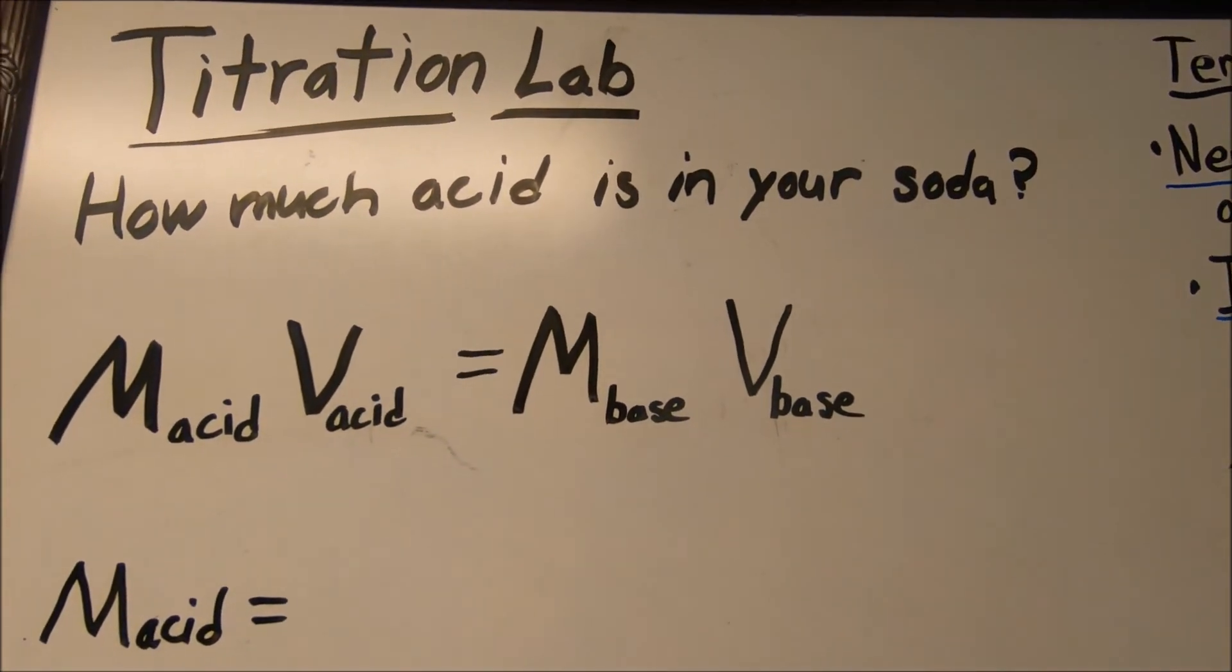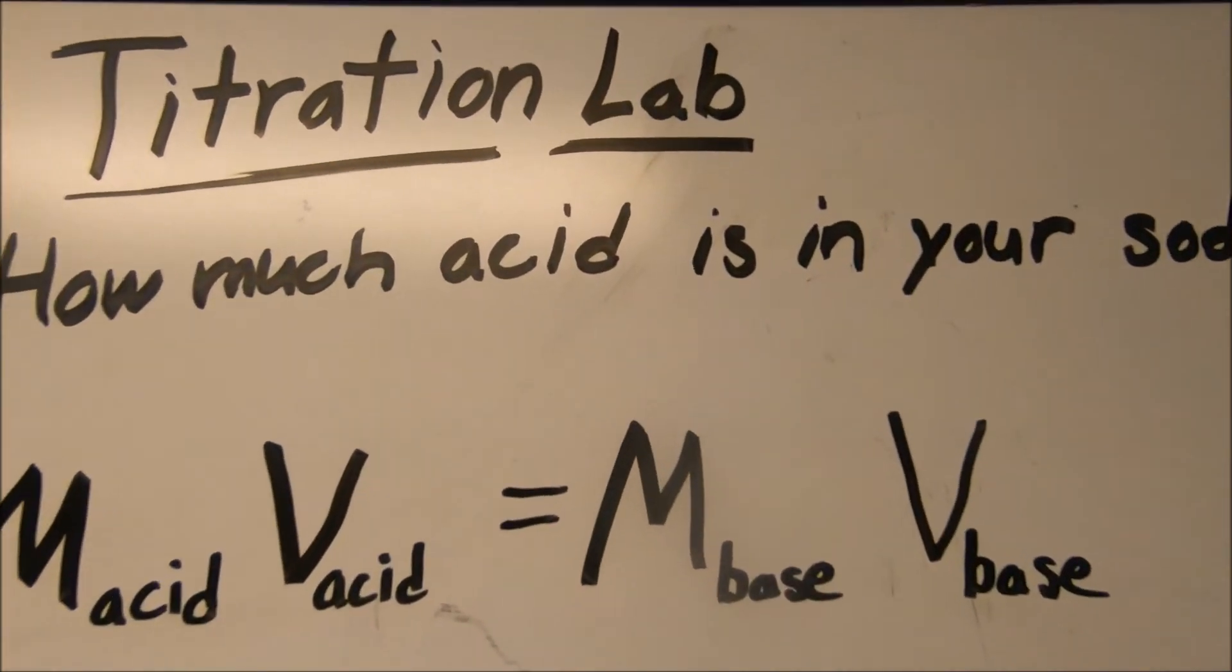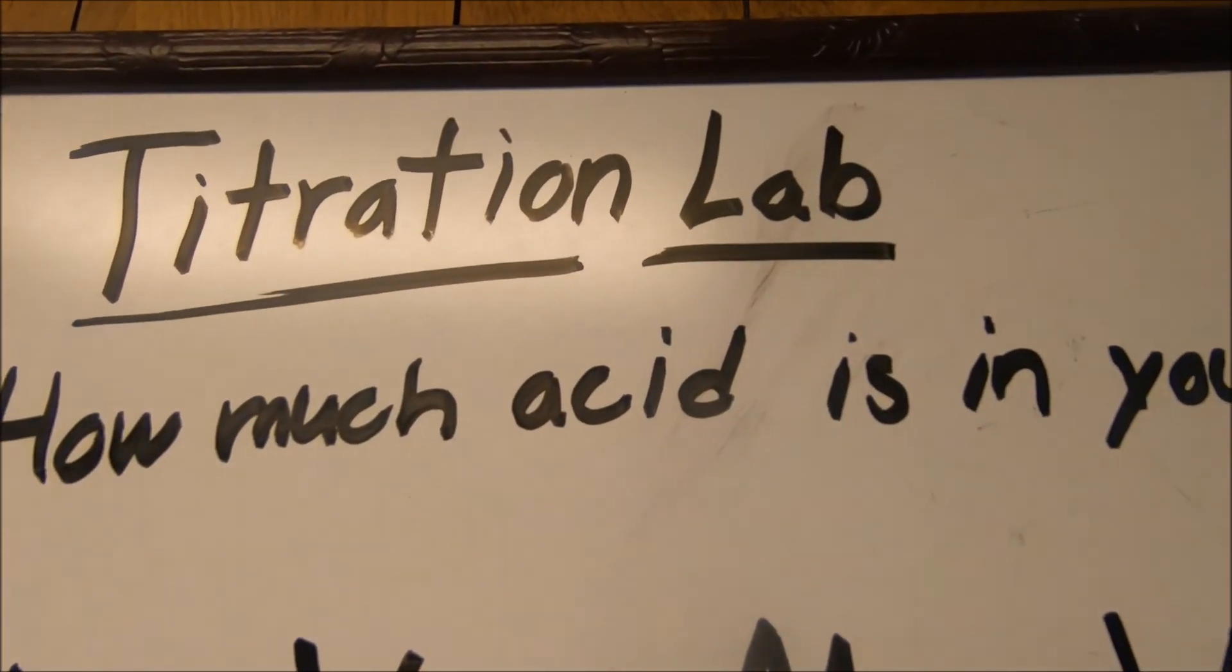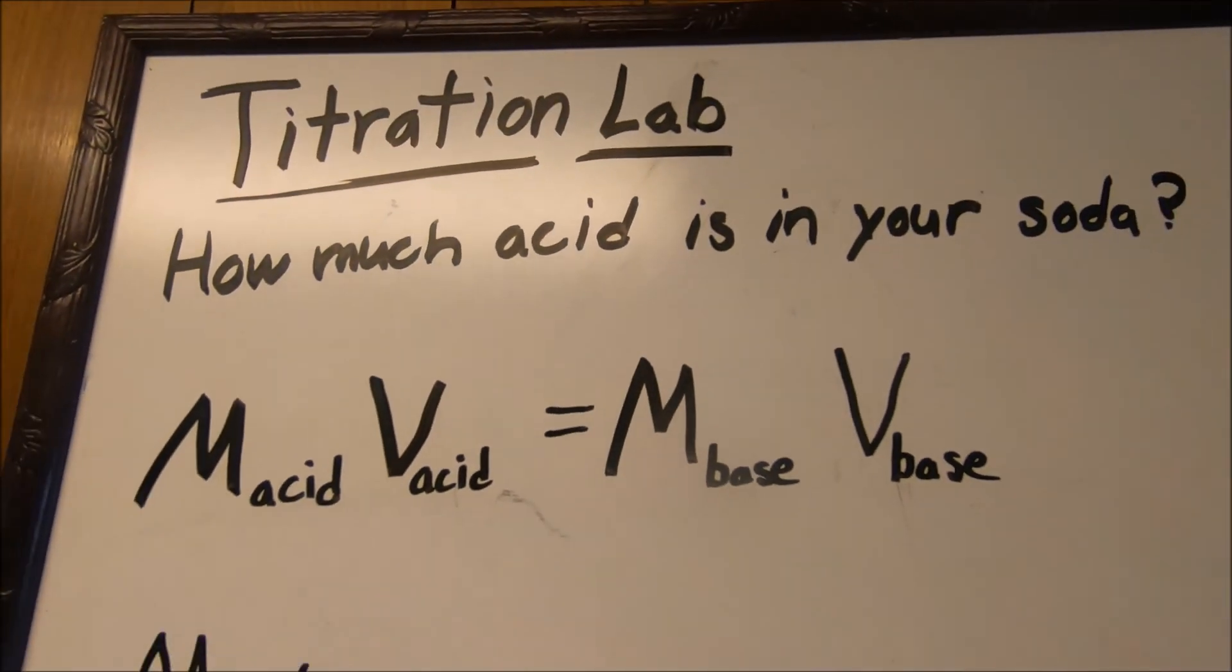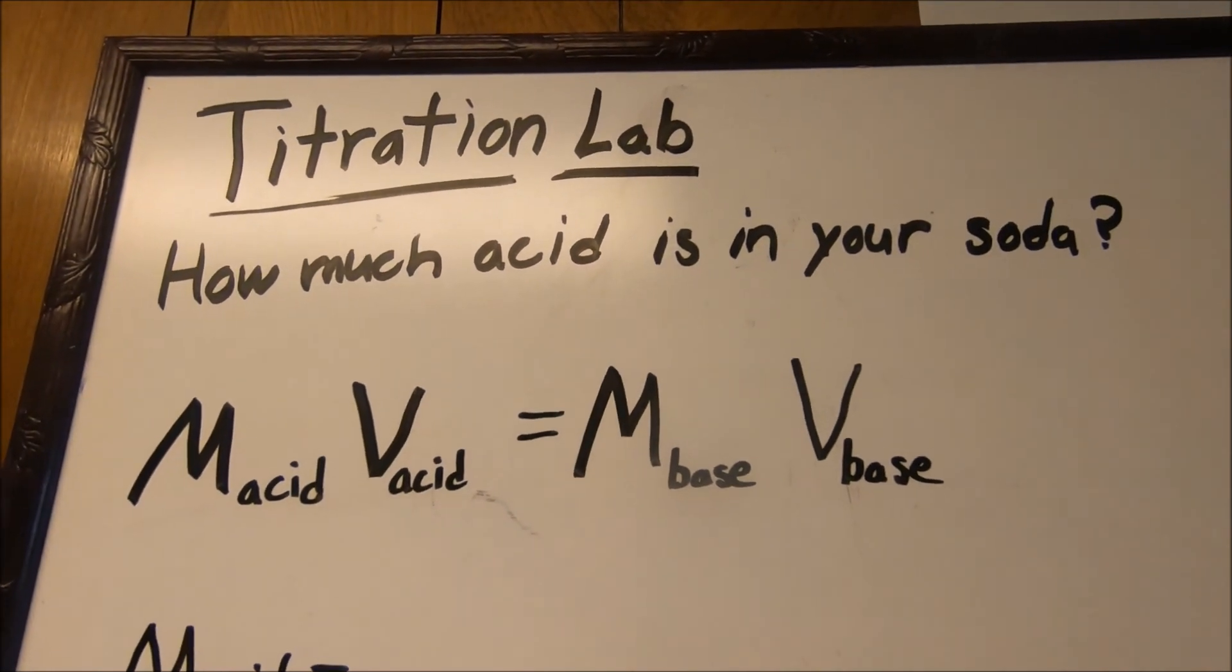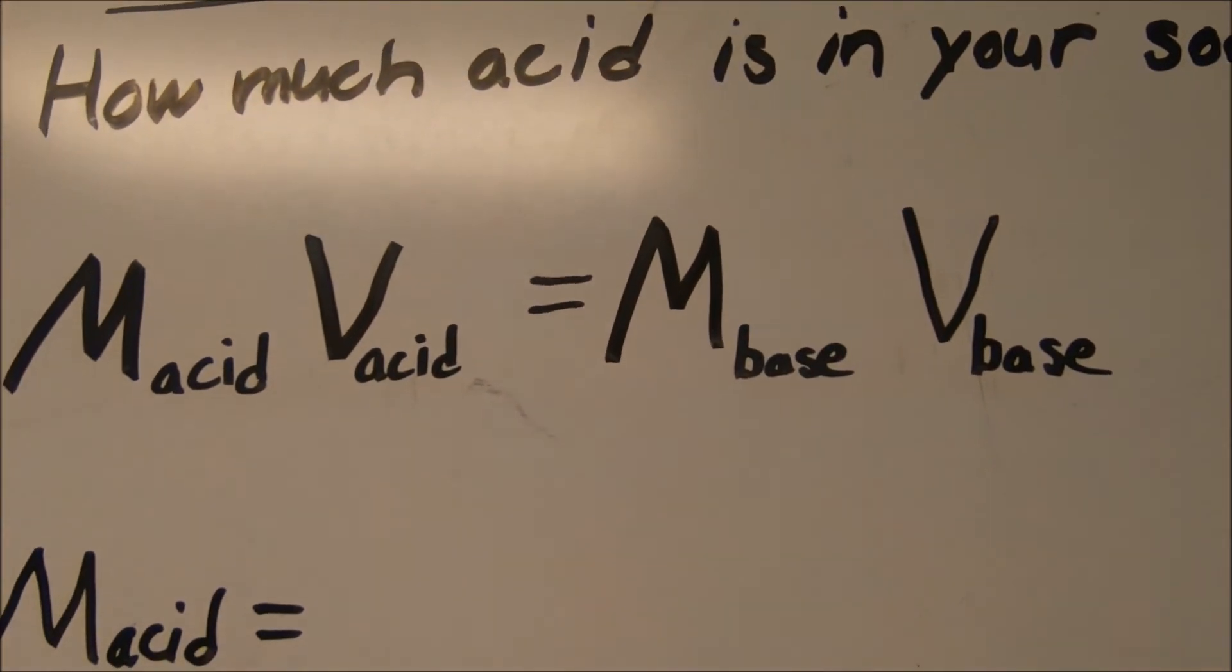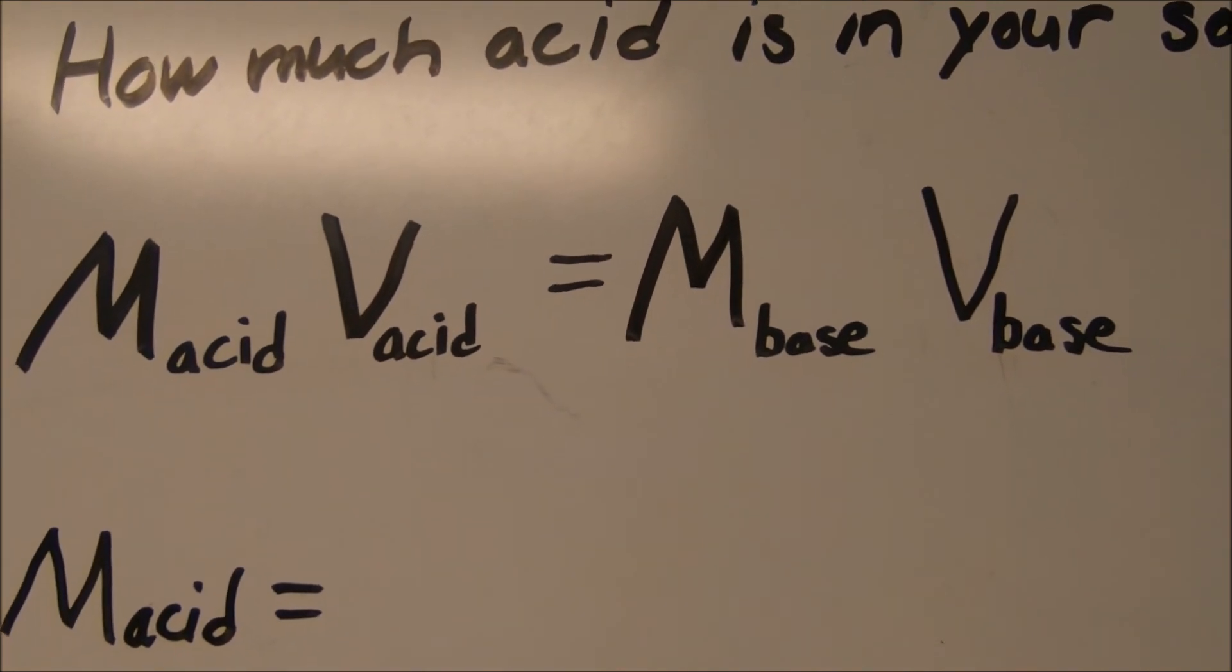Well greetings chem department, today we're going to look at a titration lab and our goal for the lab today is how much acid is in your soda. To do that we're going to look at the equation: the molarity of the acid times the volume of the acid is equal to the molarity of the base times the volume of the base.